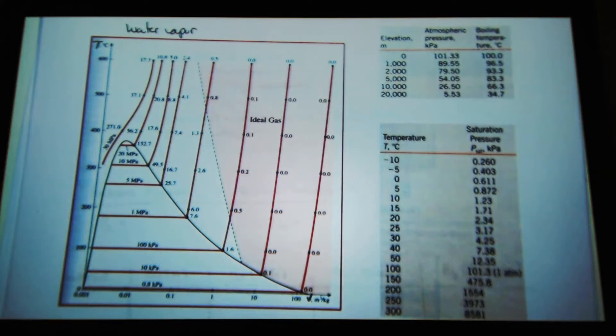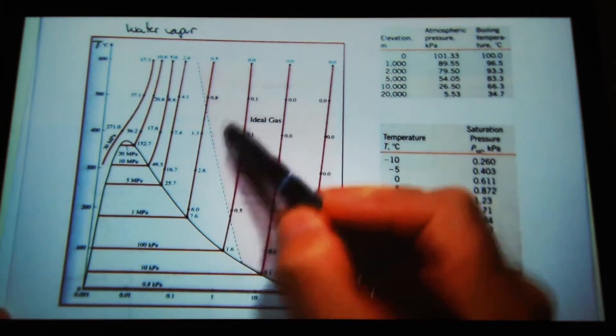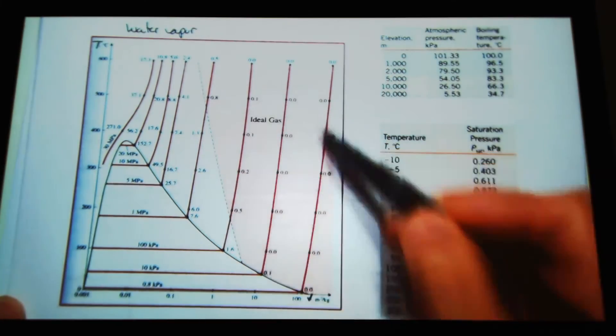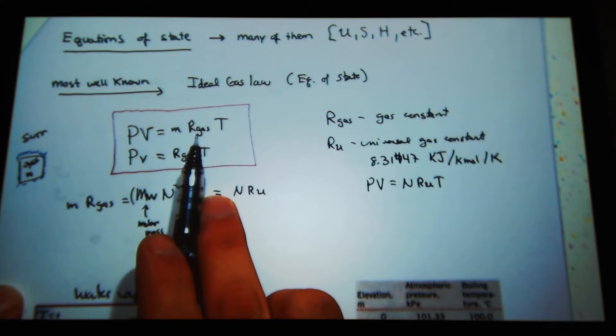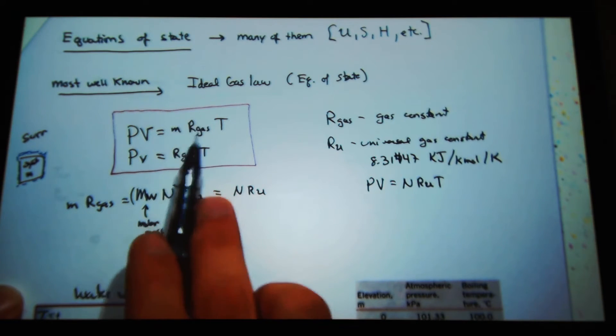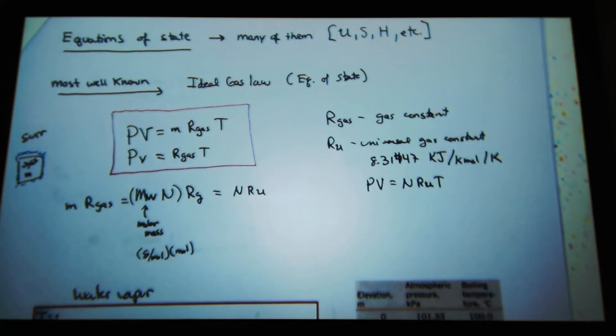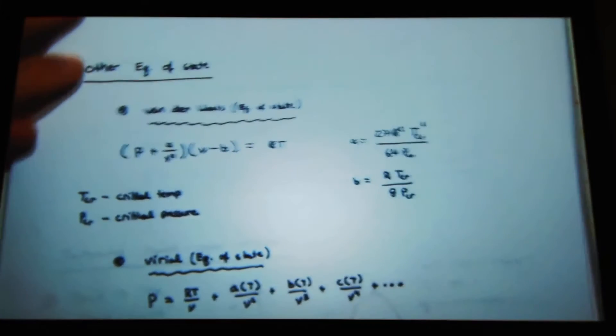When can I use the ideal gas law? And it's going to be very valid to describe this. Only in the superheated region does the ideal gas law apply. If I had a non-ideal gas, I couldn't put a gas constant. Instead, I would have some variable here which would be a function also of temperature and pressure.